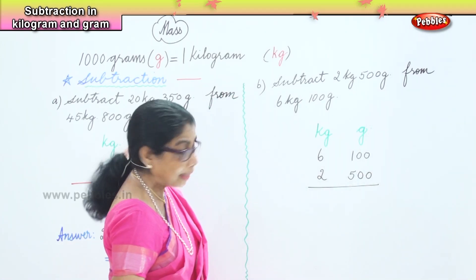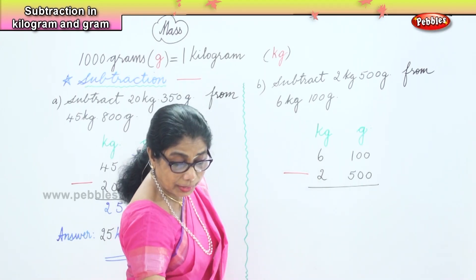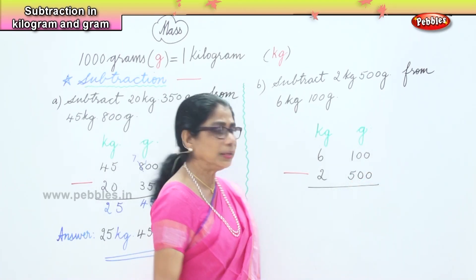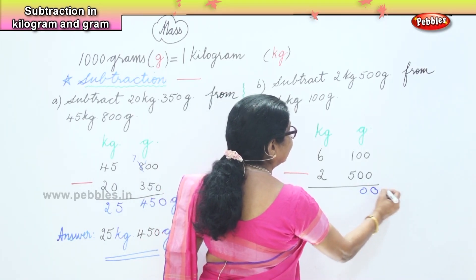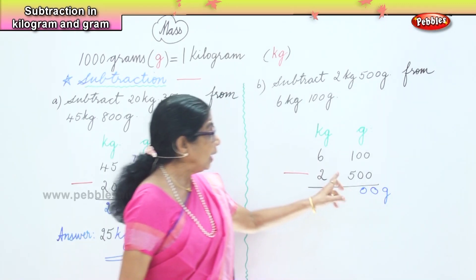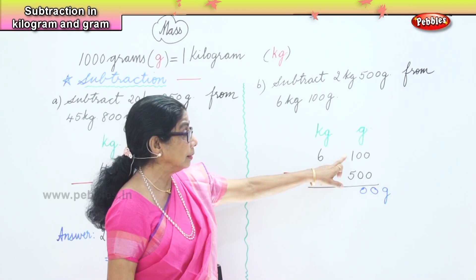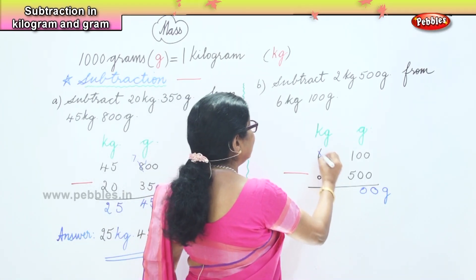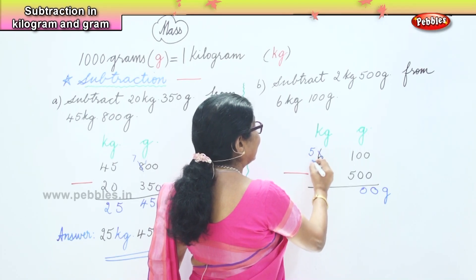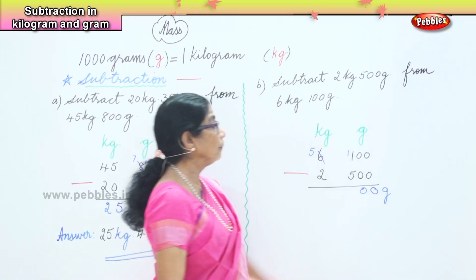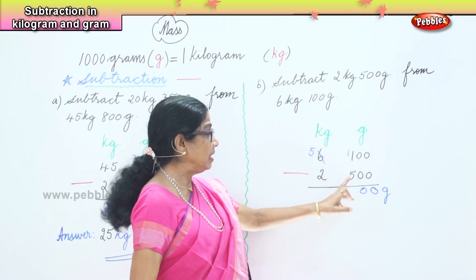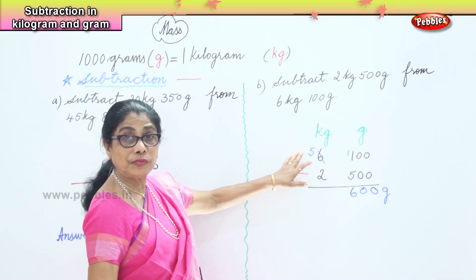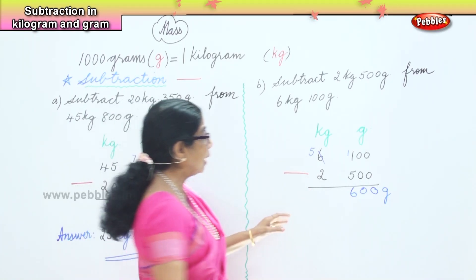Write down kilogram and gram first, then place the numbers correctly. We are subtracting from 6 kilograms 100 grams, so that goes on top. We subtract 2 kilograms and 500 grams. Put the subtraction sign. Now let's do it: 0 take away 0 is 0. We have 5 below and 1 on top — we cannot take away 5 from 1, so we borrow 1 kilogram and bring it to the grams. So we have 11 here. Now we have 5 kilograms minus 2 kilograms is 3 kilograms.